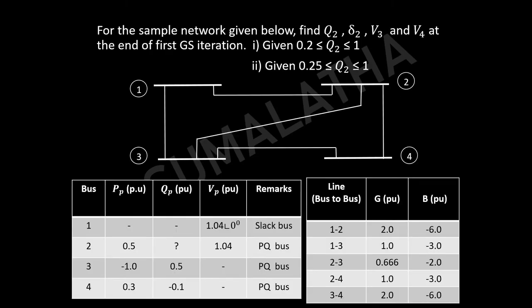Hello everyone. This is the same as a previous problem, just I have considered the second bus as a PV bus. Here it is not the PQ — this is a PV bus, because Q value is not given here. We know the real power and we know the voltage magnitude. First bus is a slack bus, second bus is a PV bus, and third and fourth buses are the PQ buses.